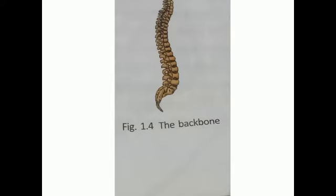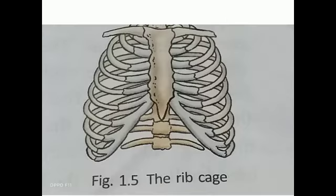Next, let us learn about the ribcage. There are 12 pairs of bow-shaped ribs which form a cage and enclose the heart and the lungs. The ribs are delicate curved bones joined to the backbone and the breast bone. The lowest two pairs, called floating ribs, are joined only to the backbone and are not attached to the breast bone.